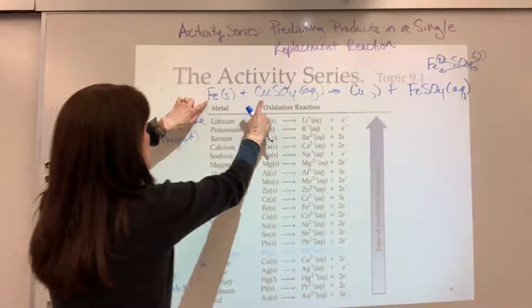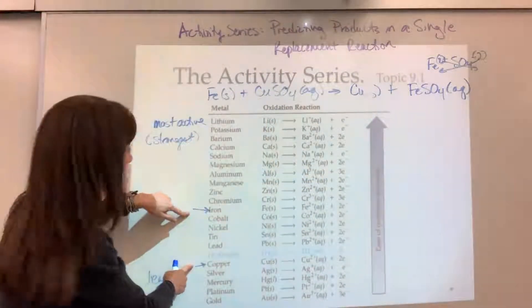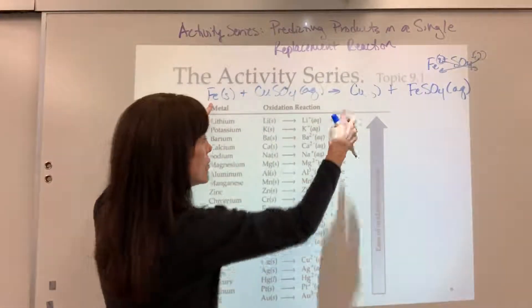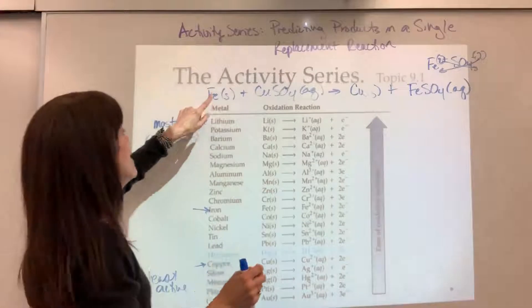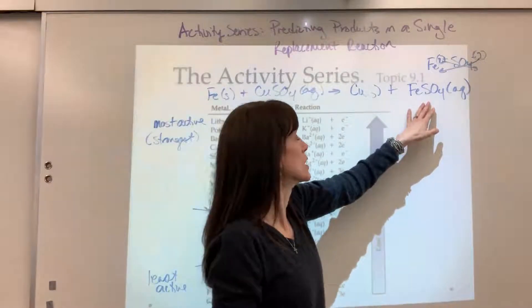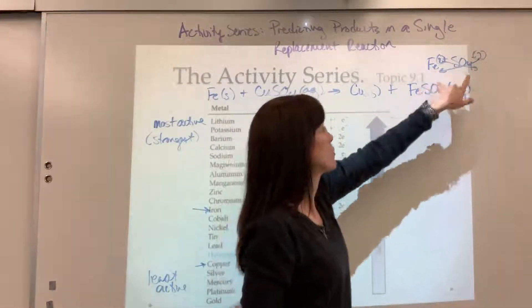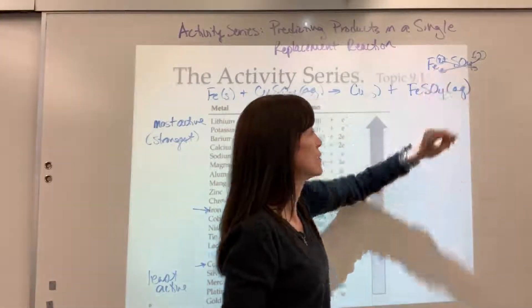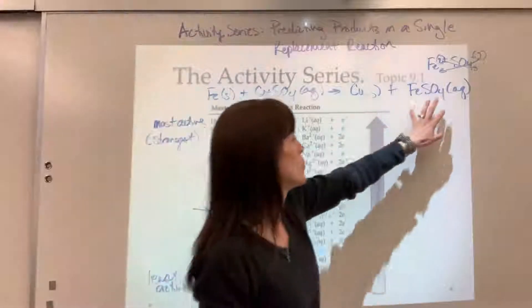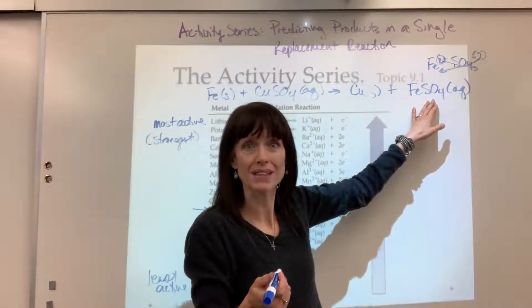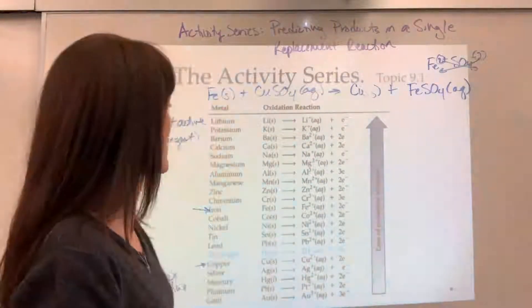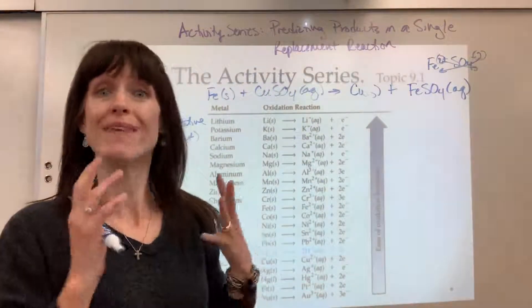One more time, let's go over that. I looked at my two metals on the activity series. The iron was more active, stronger, so it has the ability to kick the copper off. The copper is by itself, and then the iron attaches to the sulfate to be a compound in that aqueous solution. The way you get that is you're going to write down charges to make sure you get the right subscripts. If you need help with this, look on my playlist under naming, and that will help you in writing ionic compounds.